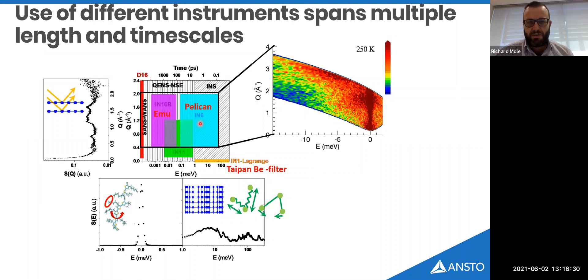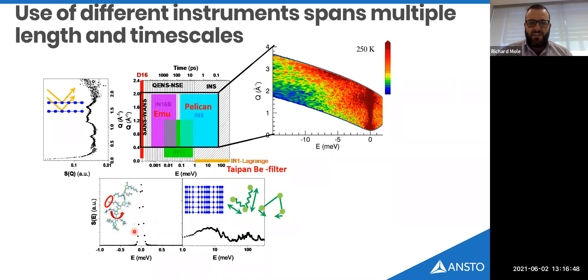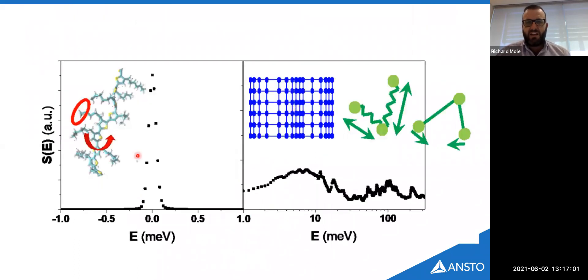The figure in her paper plots time and Q, showing which instrument was used — IN16B, IN6, and IN1 Lagrange at the ILL — and I'm highlighting that all of these measurements we can do as pretty much one-to-one comparisons with our EMU, Pelican, and Taipan Brilliant Filter spectrometers. This is a typical dataset you would get off Pelican, showing the quasi-elastic peak and the vibrational spectra.